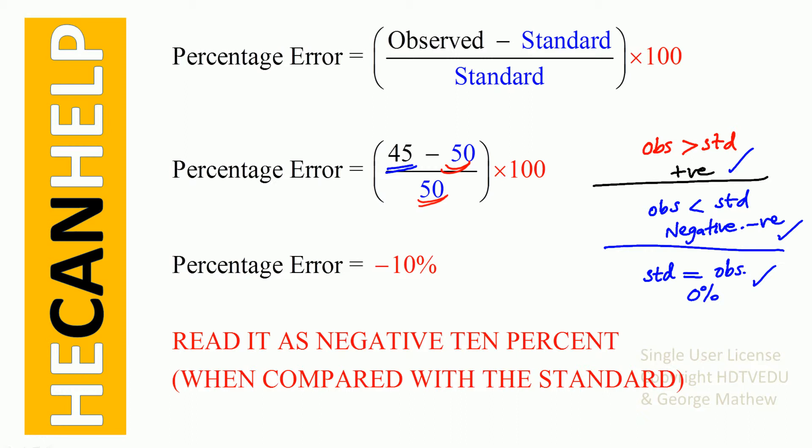That gives you: 45 minus 50 is negative 5. Negative 5 over 50 is negative 1 over 10. And negative 1 over 10 times 100 is negative 10%. So we have negative 10%.